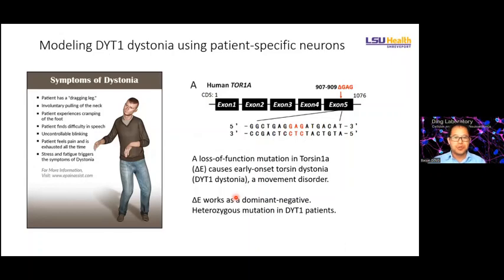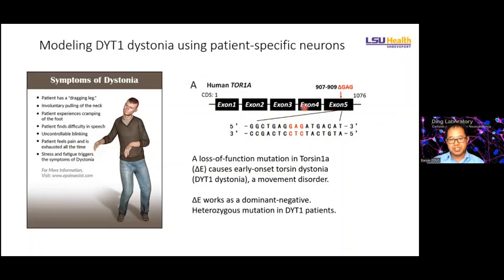Now I'll give you an example. We're using patient-specific neurons to model a movement disorder called dystonia — specifically DYT1 dystonia. Dystonia is a movement disorder, and DYT1 dystonia is a subtype specifically caused by a gene mutation in the human TOR1A gene — basically a heterozygous GAG deletion in exon 5 of the TOR1A gene.